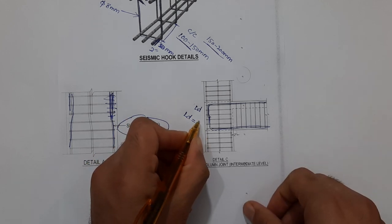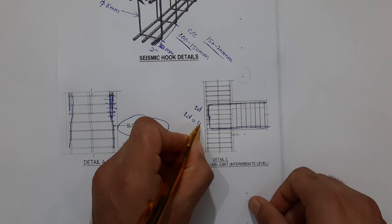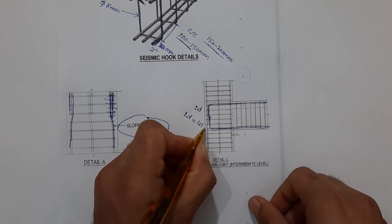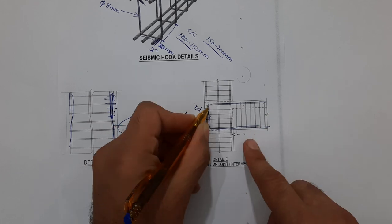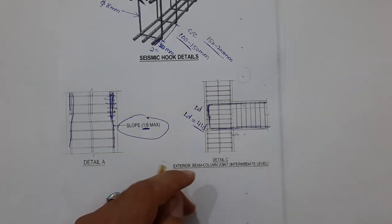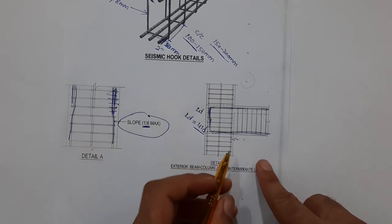The Ld should not be less than, from IS 456:2000, 41d, where d is the diameter of steel rod. Then you can get this length from IS 456:2000.